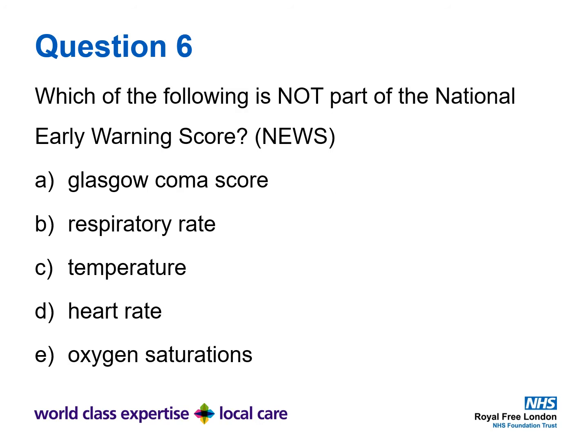Question 6. Which of the following is not part of the National Early Warning score? A: Glasgow Coma score, B: respiratory rate, C: temperature, D: heart rate, E: oxygen saturations.